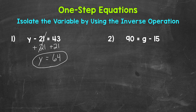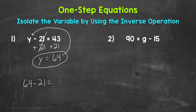We can always check a solution by plugging it into the original equation. So let's plug 64 in for y and see if this works. 64 minus 21 equals 43. 64 minus 21 does equal 43, so we have the correct solution. y equals 64.